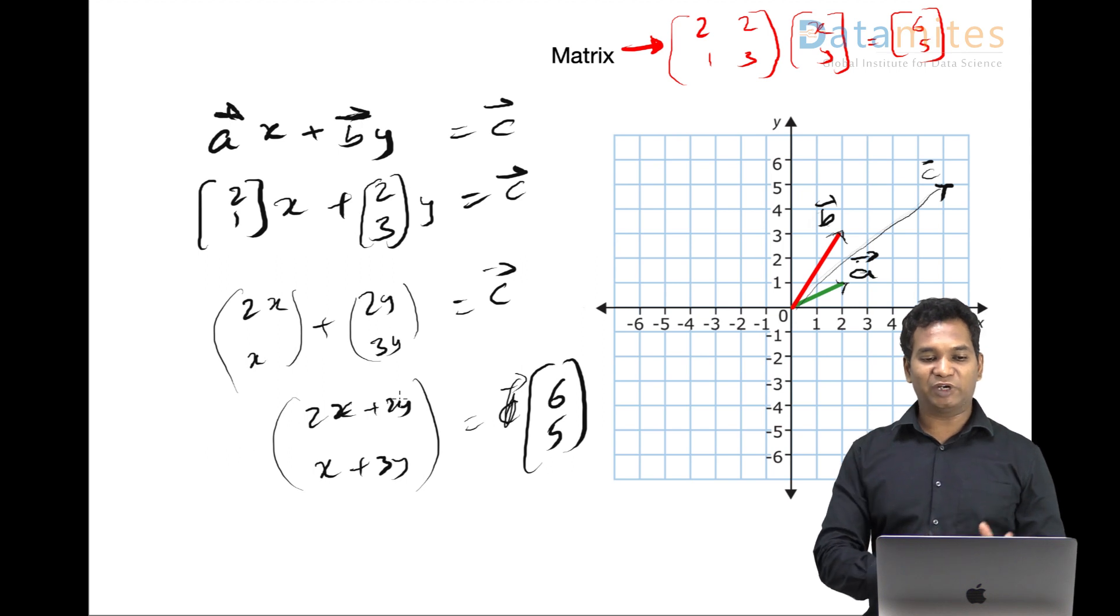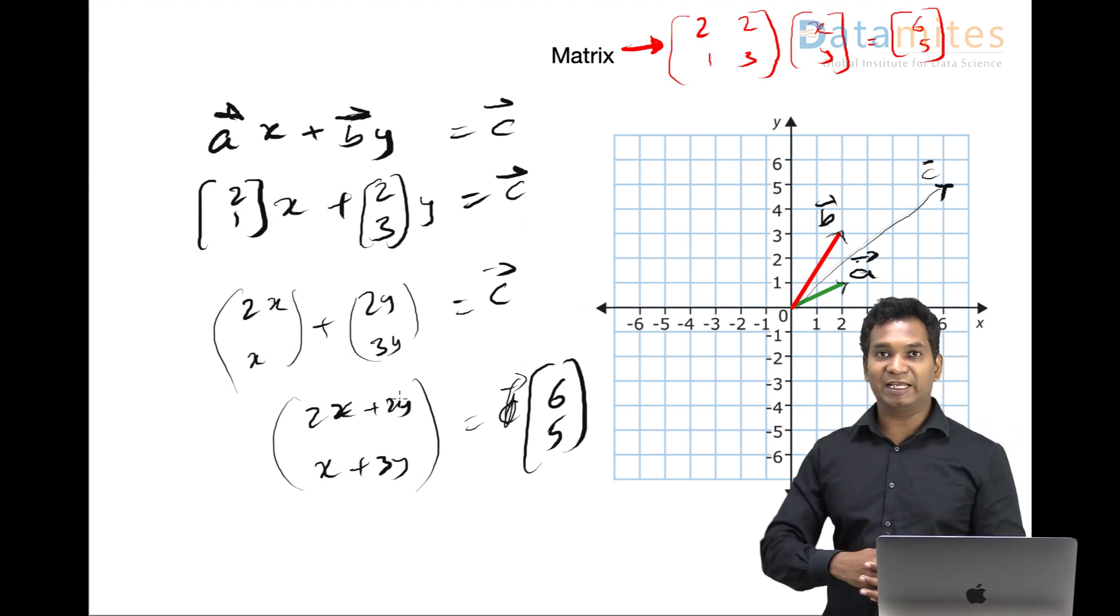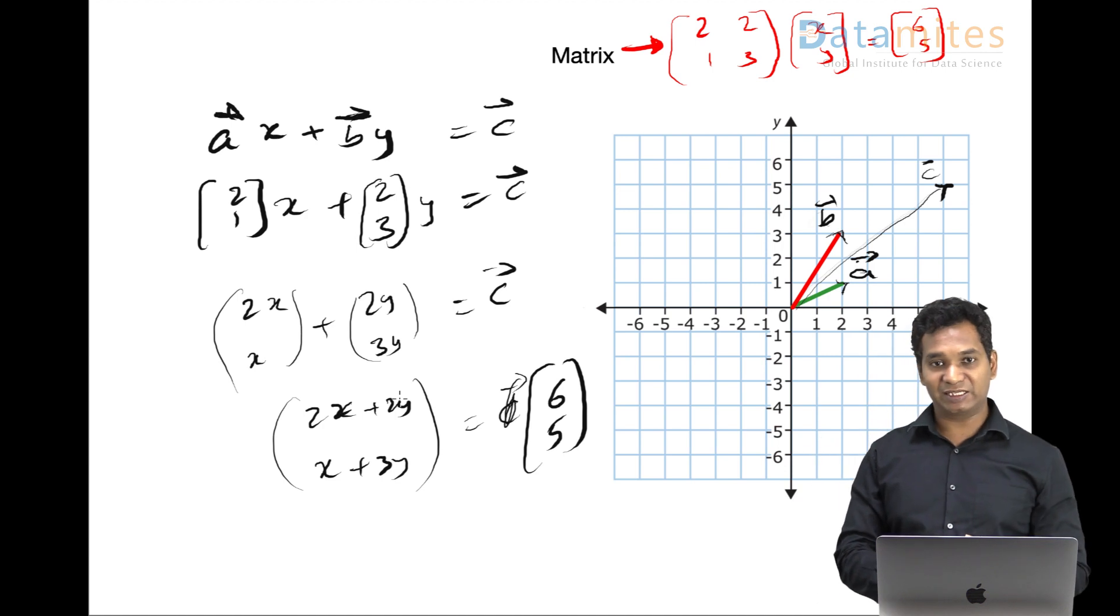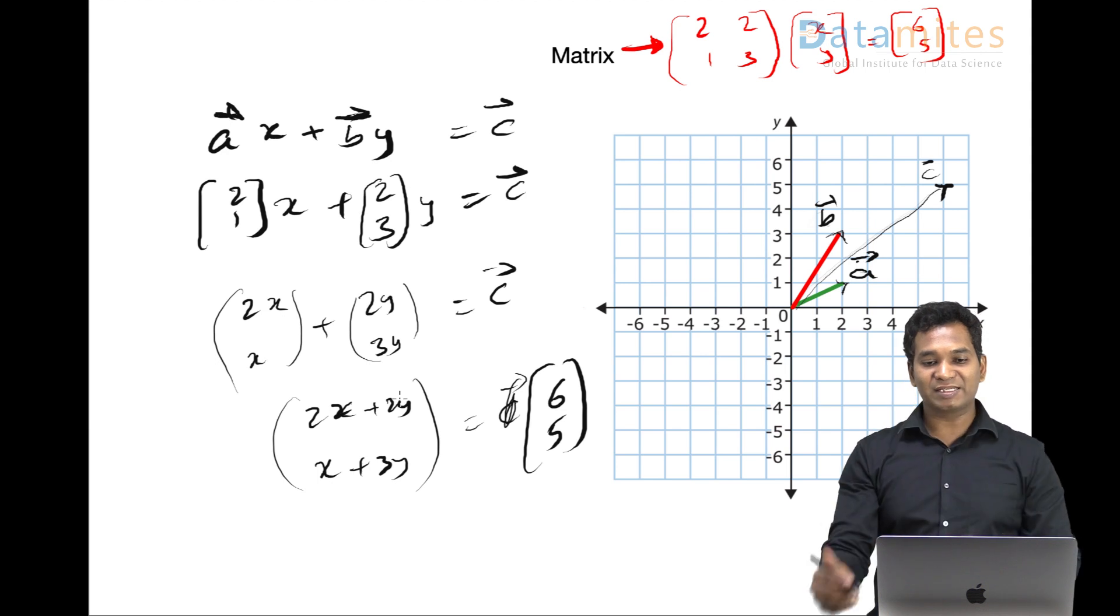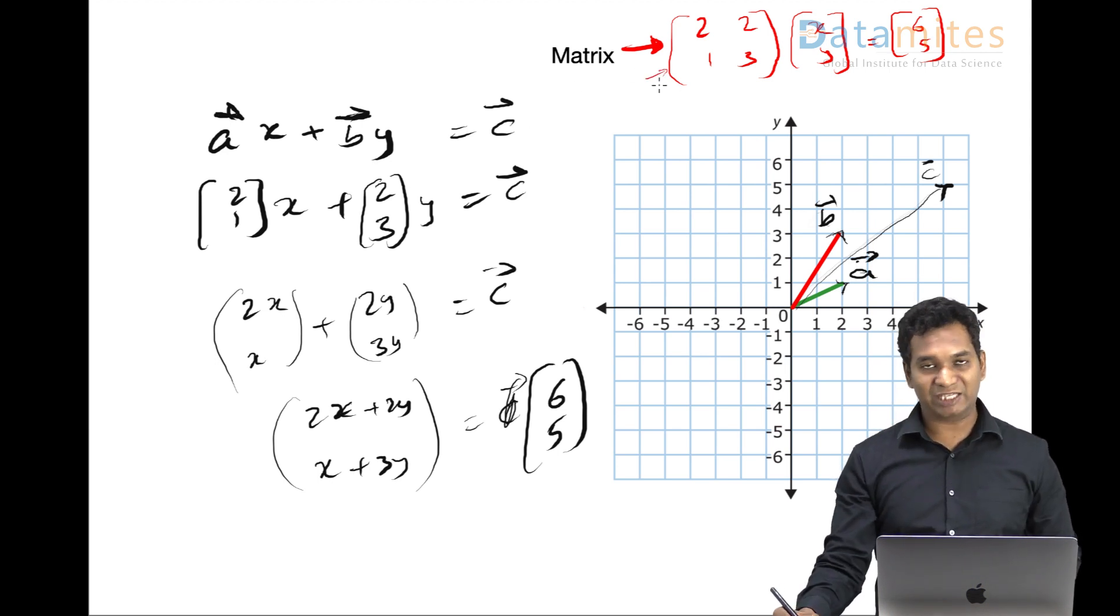So what you have just done is we have represented a problem which you'd like to solve: trying to find a linear combination of a and b vectors with some scale values x and y which results in a new vector c, which is (6, 5). And we have put that problem in one simple box we call as matrix.